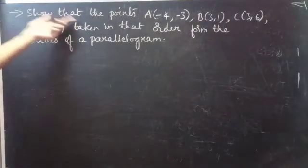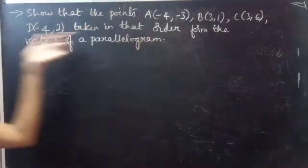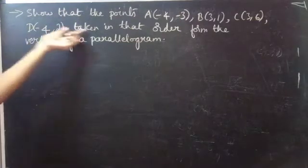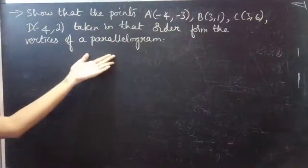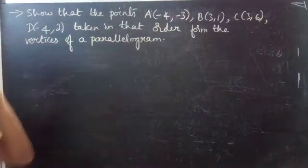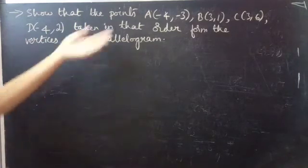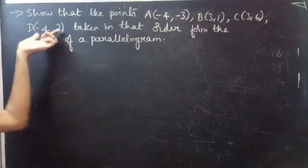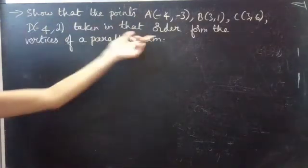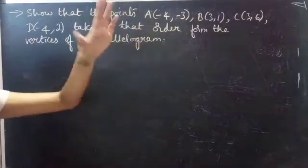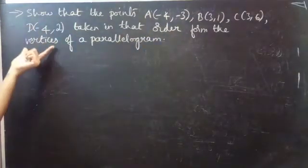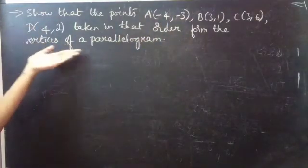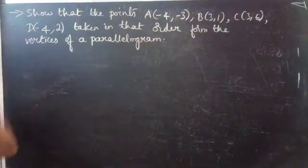Show that the points A, B, C, D taken in that order form the vertices of a parallelogram. Here we have to show that these points taken in that order, that is A, B, C, D, form vertices of a parallelogram.